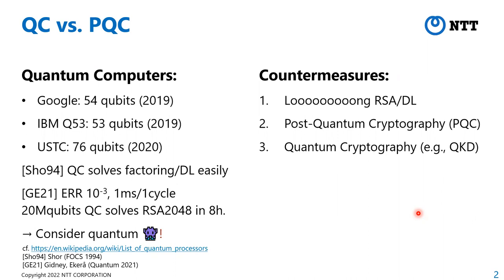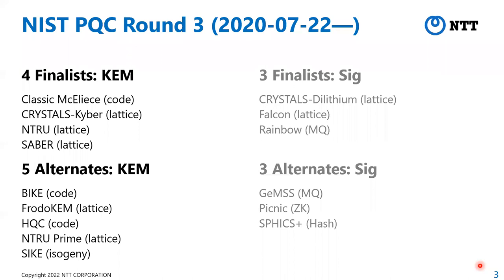One promising countermeasure is post-quantum cryptography, or PQC. Therefore, NIST in the US has been standardizing PQC primitives, including KEMs and signatures. For KEMs, they selected four finalists and five alternates. NIST said they would announce results in March, but we have not heard the result yet. Here we consider the security of KEM schemes.